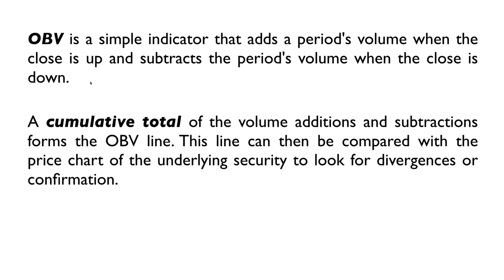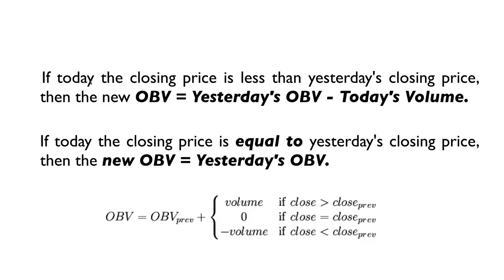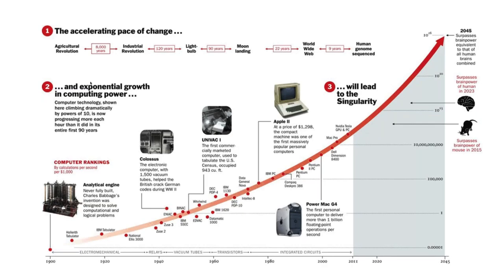OBV — the indicator Granville came up with in 1963 — is pretty simple. It adds a period's volume when price closes up and subtracts the period's volume when it closes down. The cumulative total forms the OBV line, which can be compared with the price chart to look for divergences or confirmation. If today's closing price is greater than yesterday's, the new OBV equals yesterday's OBV plus today's volume. If today's close is less than yesterday's, the new OBV equals yesterday's OBV minus today's volume.